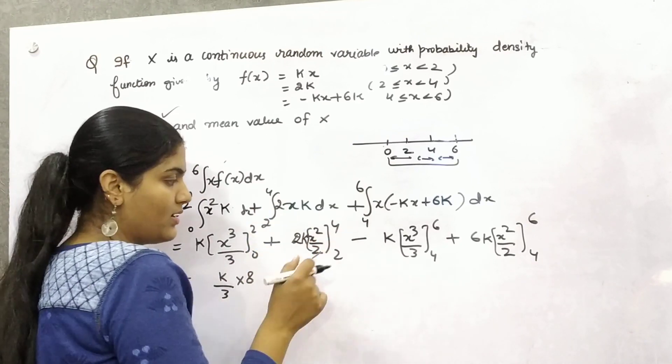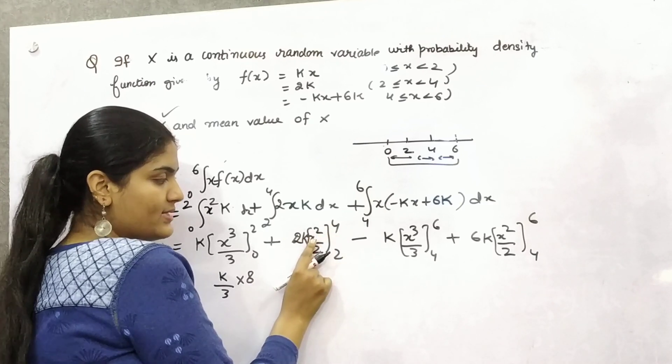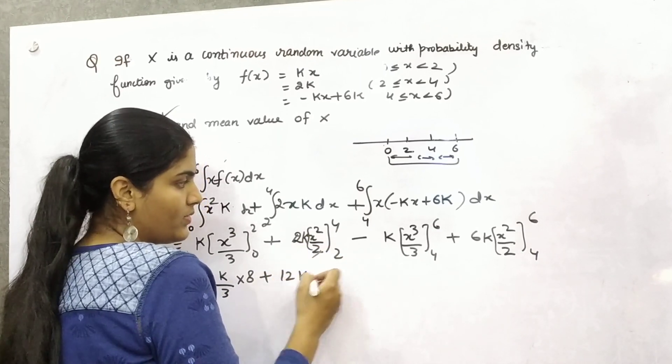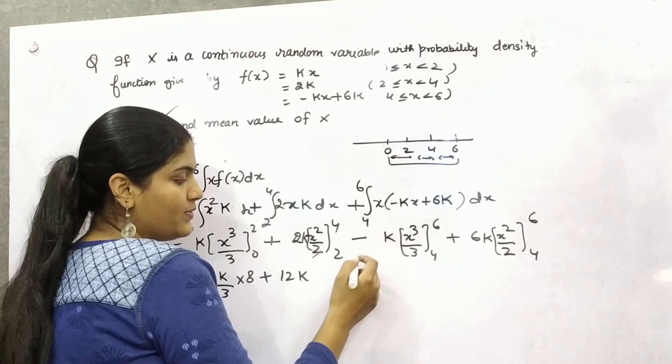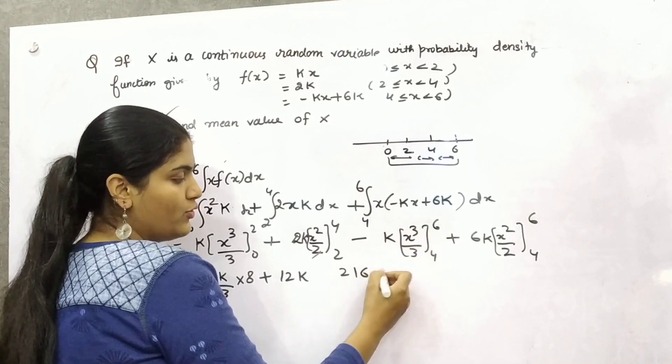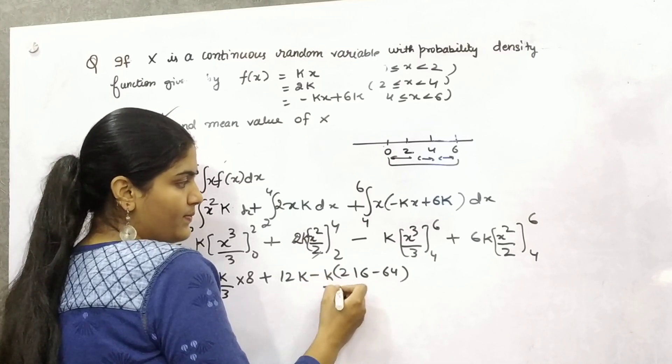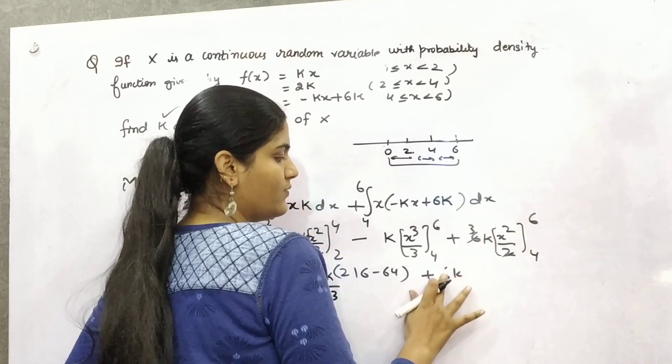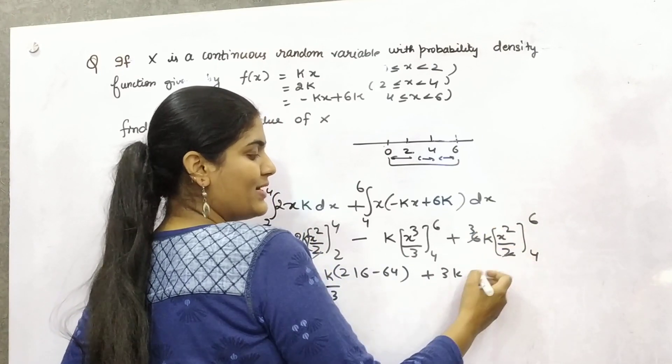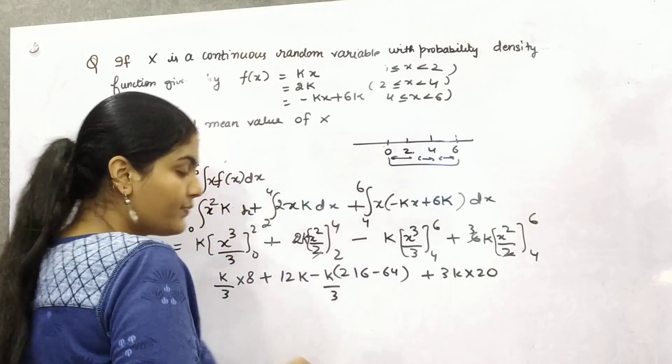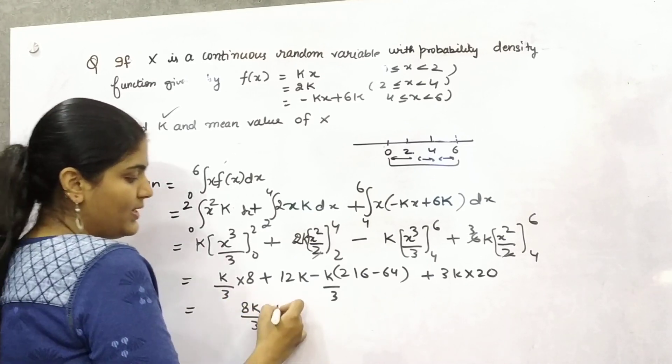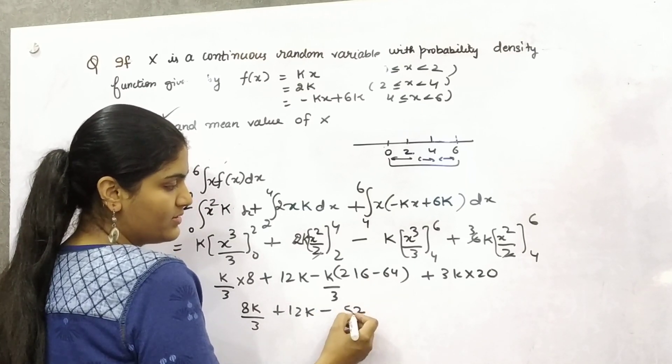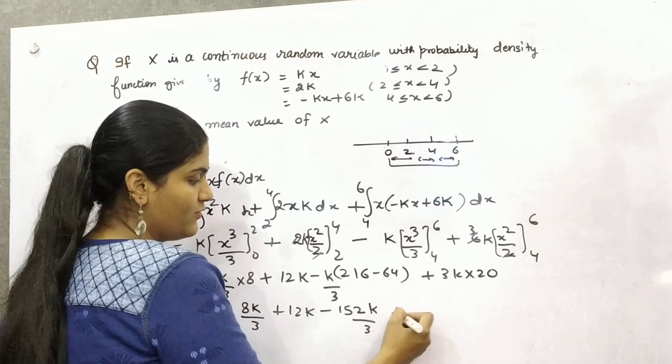So upper limit minus lower, k by 3, 2 cube is 8. Upper limit 4 squared, you can cancel 2 by 2. Upper limit minus lower, 4 squared is 16 and 2 squared is 4, so 16 minus 4 is 12. So it is 12k. This would be 6k which is 216, and 4 cubed which is 64. Upper limit minus lower, minus 152k by 3 plus 6k. You can cancel 2 with this, 3k. Upper limit minus lower, 36 minus 16 is 20.